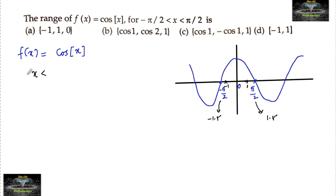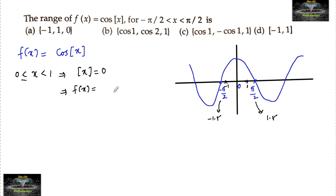For x in [0, 1), the step value ⌊x⌋ = 0, which implies f(x) = cos(⌊x⌋) = cos(0) = 1. So from 0 to 1, f(x) has the value 1.